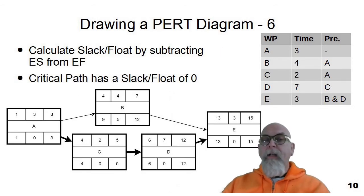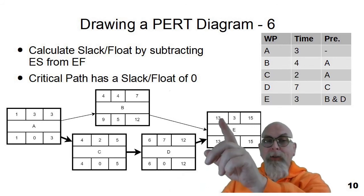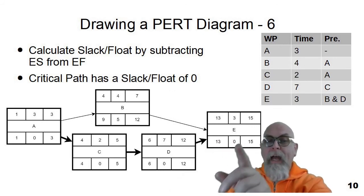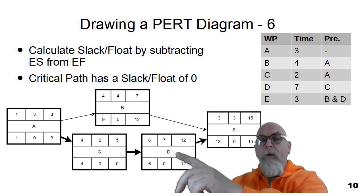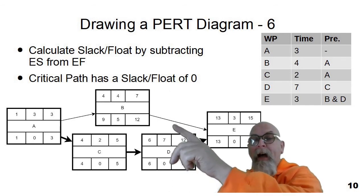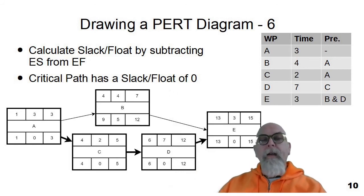Now that late start is calculated, early start, early finish, late start, late finish have all been calculated. The last thing to calculate is slack. Basically, we take early start and late start and subtract them and that becomes the slack. We can also do late start and late finish. That's a good way to check to make sure that you've calculated everything correctly. So thirteen minus thirteen is zero, six minus six is zero. B, four minus nine is five. C, four minus four is zero. And A, one minus one is zero. So the network nodes on the critical path will have a slack or float of zero.